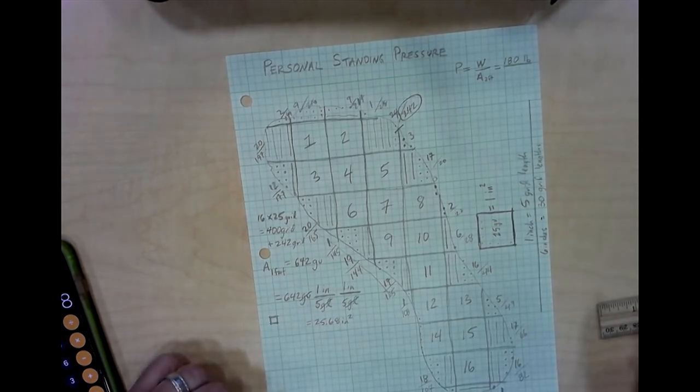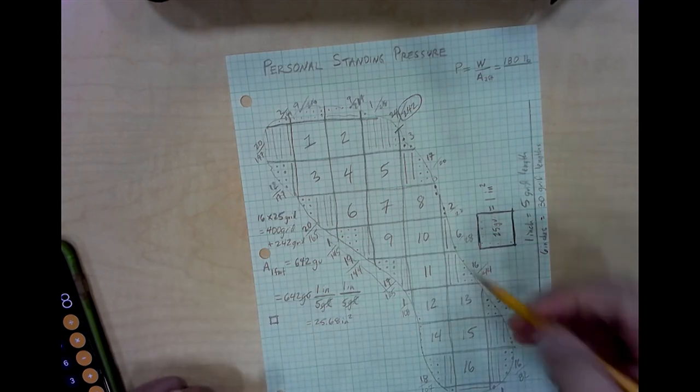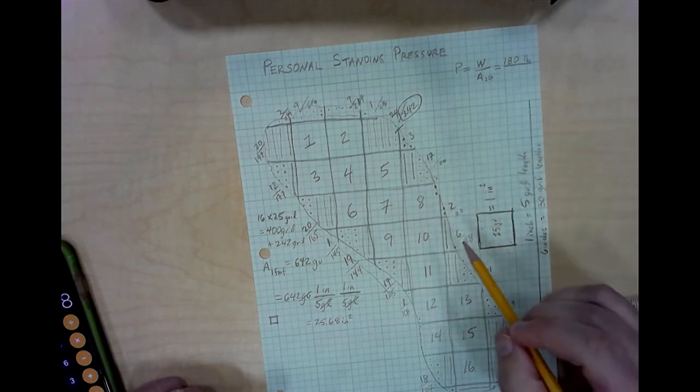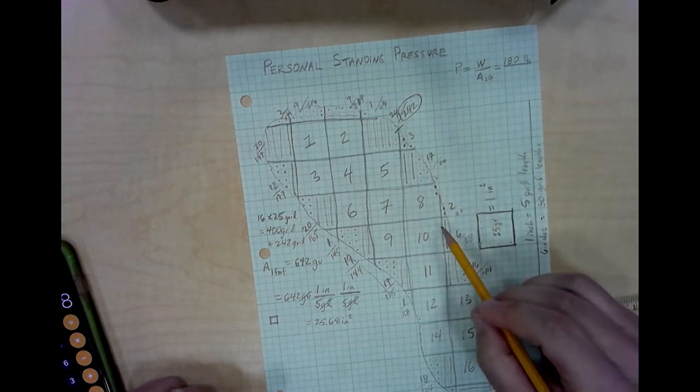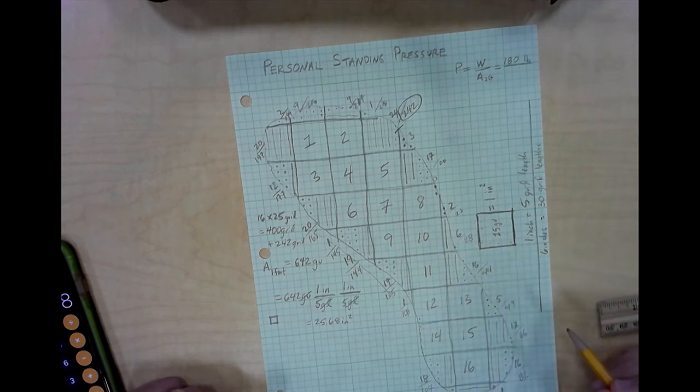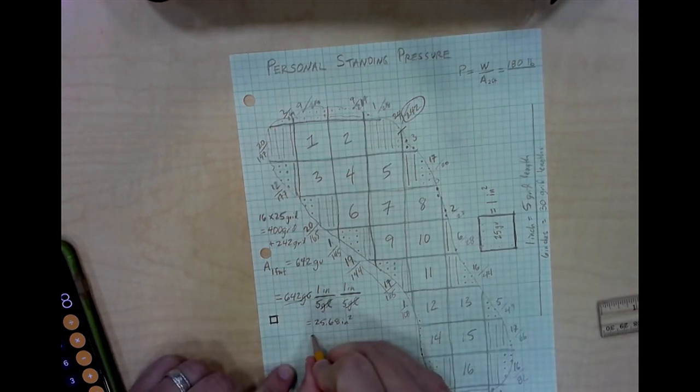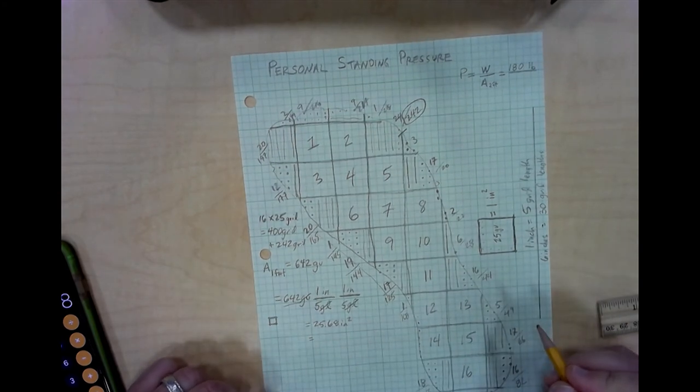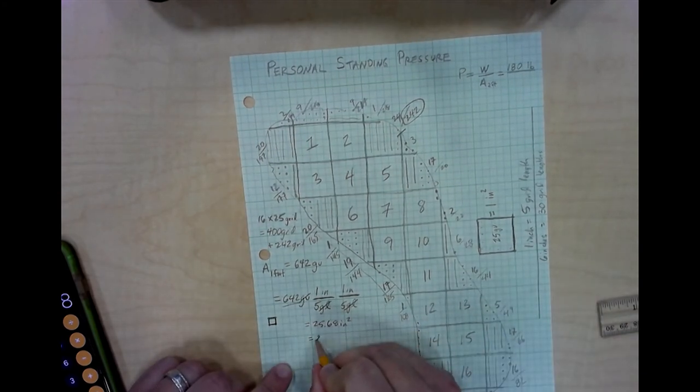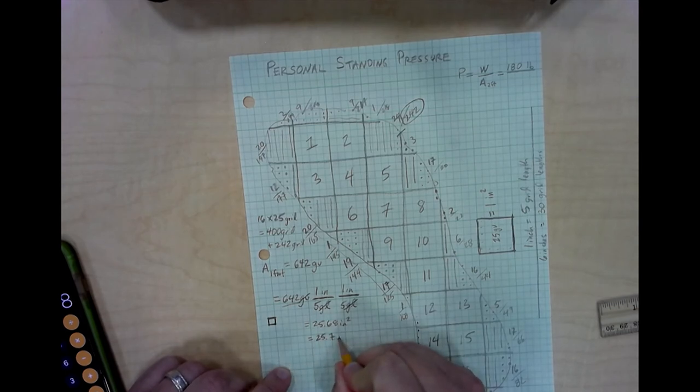Now I have to be a little careful here because I wrote 25.68 square inches because that's what my calculator told me. But I also have to realize that I wasn't particularly careful. I wasn't counting down to quite that level of detail when I was figuring out how many dots I have. So we're going to keep the appropriate number of significant figures here. Notice I have three significant figures in my number 642. Okay, so that's the most that I can actually keep here. So to be more appropriate, okay, I'm going to actually record this as 25.7 square inches.